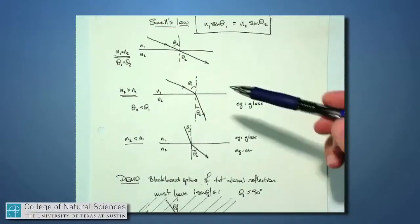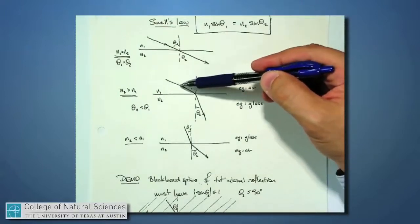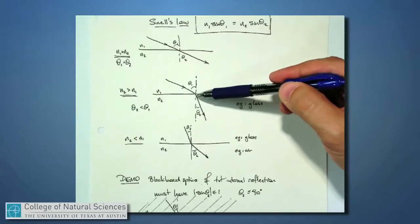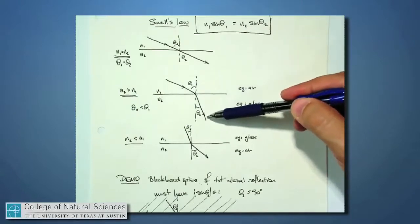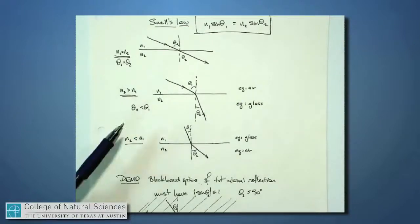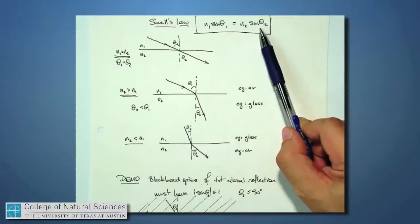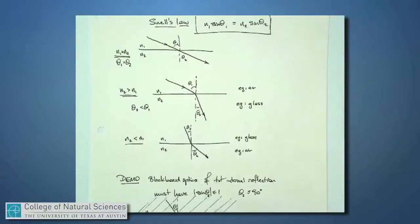On the other hand, if I'm shooting light from a material that has an N1 that is smaller than the second material that I'm shooting into, which has an index N2, then Snell's Law says that if N2 is bigger than N1, then theta 2 should be smaller than theta 1. Why is that? Because if N2 is bigger, I've got to make the sine of this angle smaller in order to keep the product equal constant. So that might be an example where I go from air into glass,